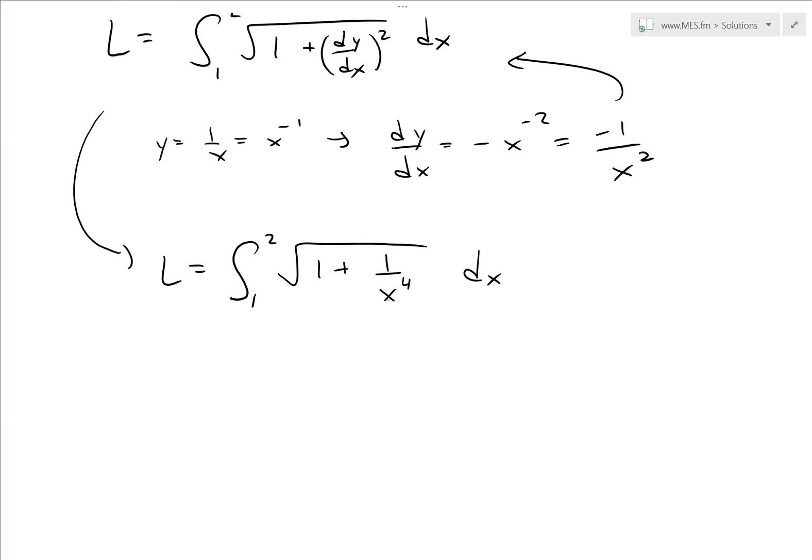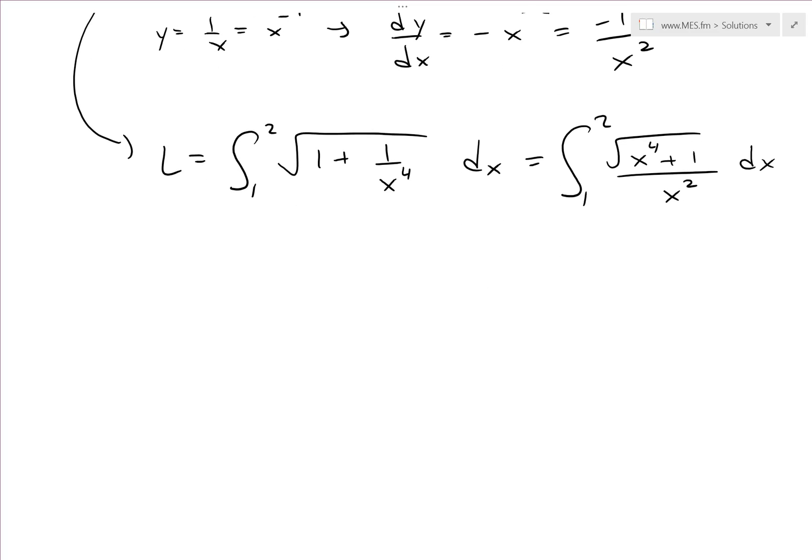And if you want to simplify this further, multiply both sides by top and bottom by x to the power 4 divided by x to the power 4. And you get, basically, you could also write it like this. This becomes x^4, and x^4 cancels here, but you're also dividing by x^4. So you'll have a square root x^4, which cancels, and you're just left with x squared. So this whole thing divided by x squared dx. That's just a different way of rewriting it. We'll just deal with this.